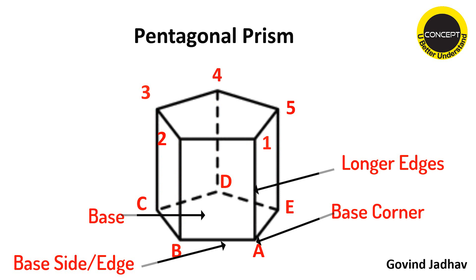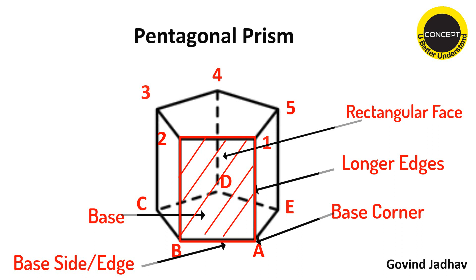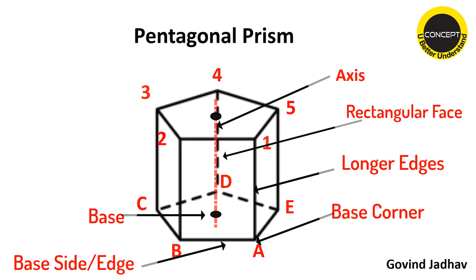If you join the center of the base and the center of the top with an imaginary line, this line is called the axis. Generally, prisms are specified in terms of two dimensions: base side and axis. Only these two dimensions are needed — base side and axis.